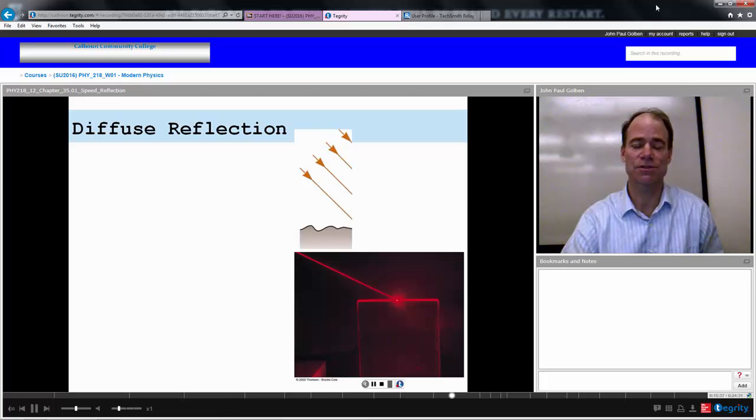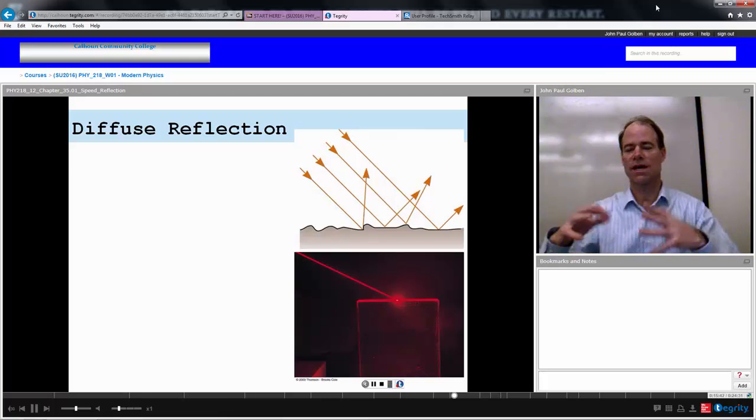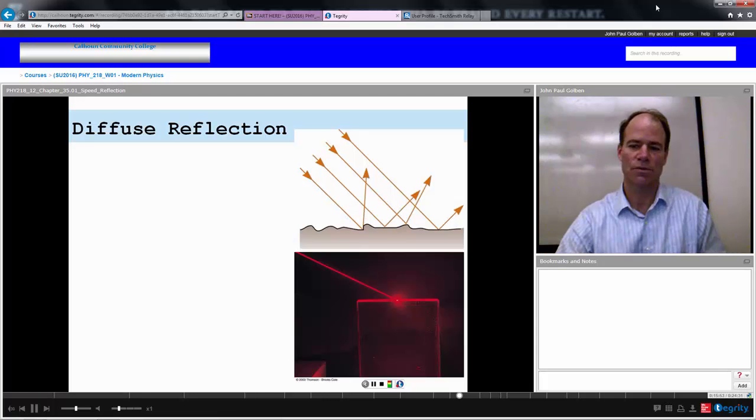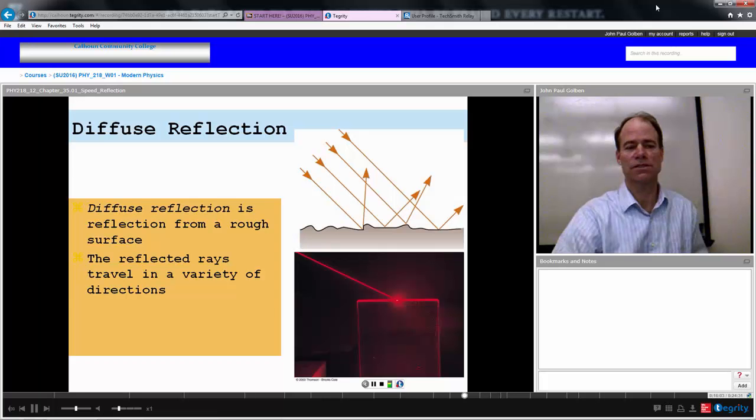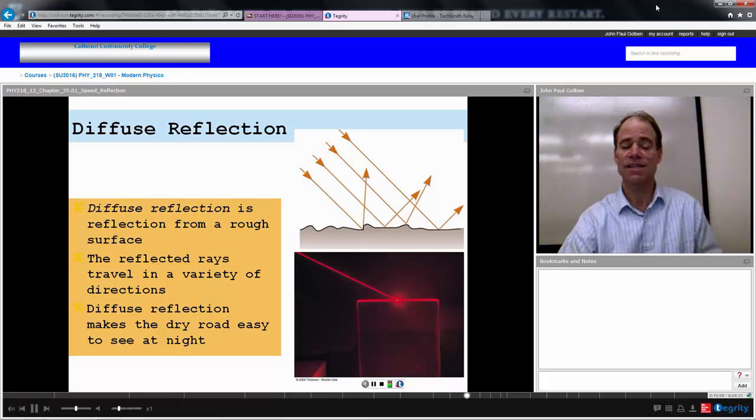You could have diffused reflection. Let's say that the surface is not so smooth, it's kind of rough, and the rays come in and they reflect, but because of the rough surface, the reflected rays are going off in all directions, so they're not parallel when they come off. So, they can go off in all directions, and then, most likely, those rays can possibly make it to your eye. So, diffuse reflection is from a rough surface. The reflected rays travel in a variety of directions, and this kind of makes things easier to see.